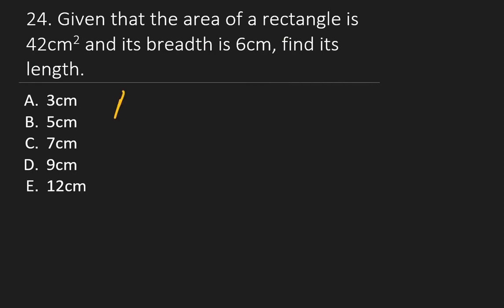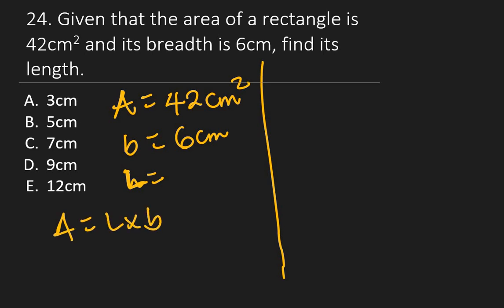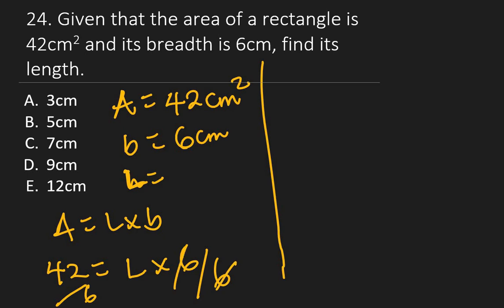Question 24: Given that the area of a rectangle is 42 cm² and the breadth is 6 cm, find the length. Area = length × breadth, so 42 = length × 6. Divide both sides by 6: length = 42 ÷ 6 = 7 cm. The right answer is C.